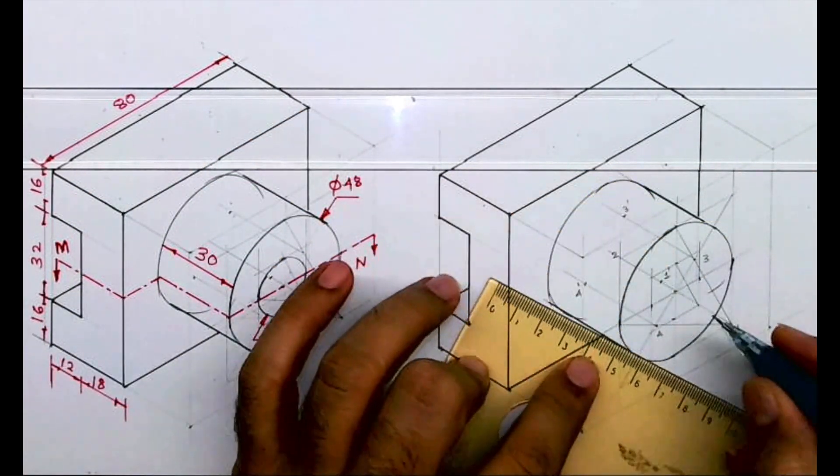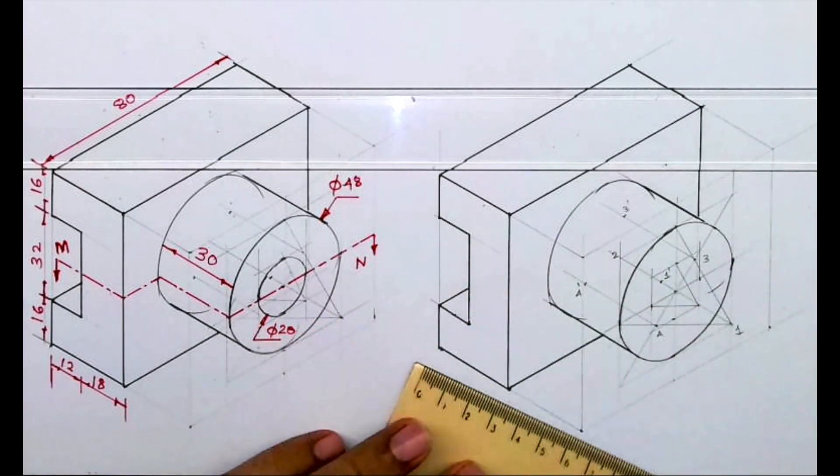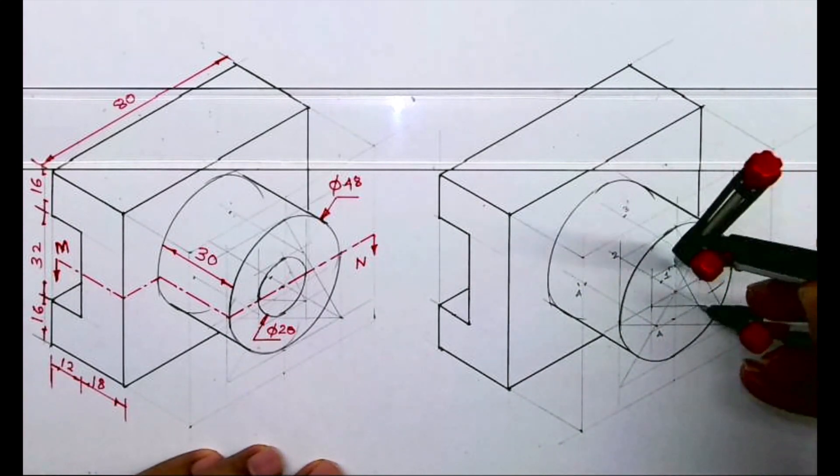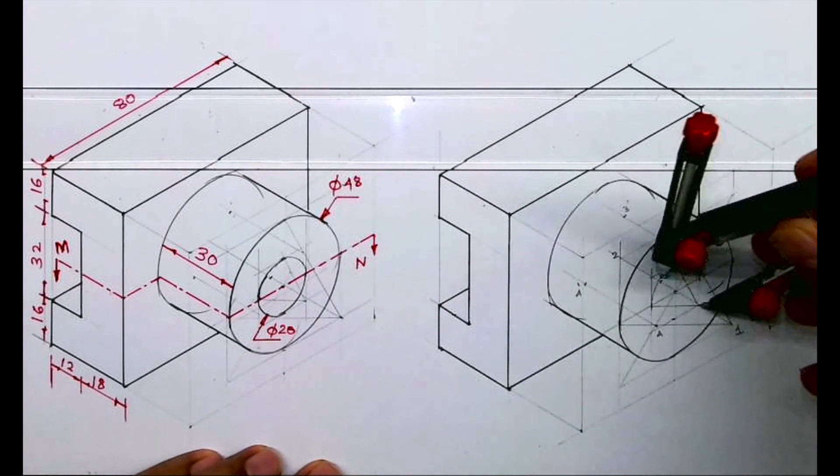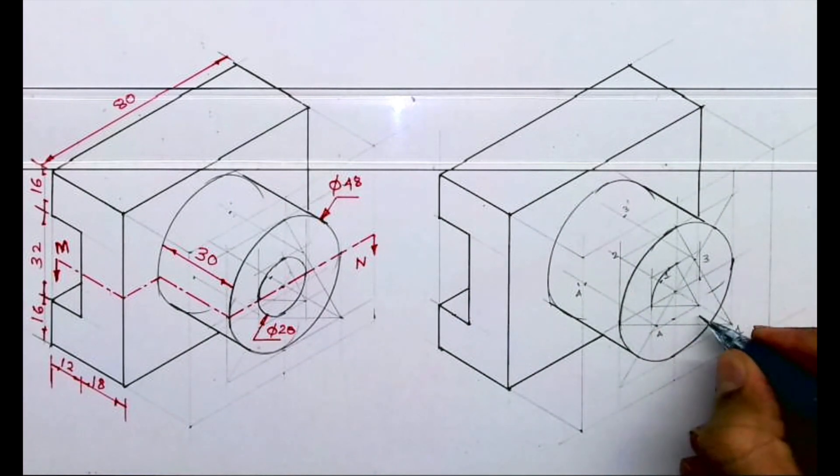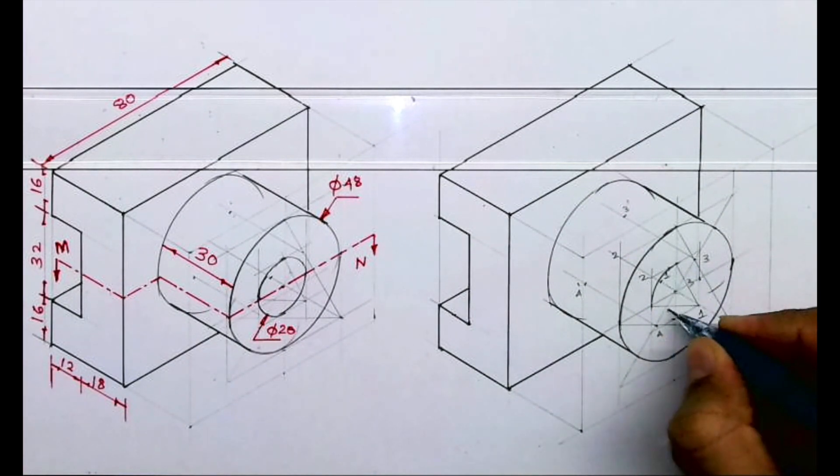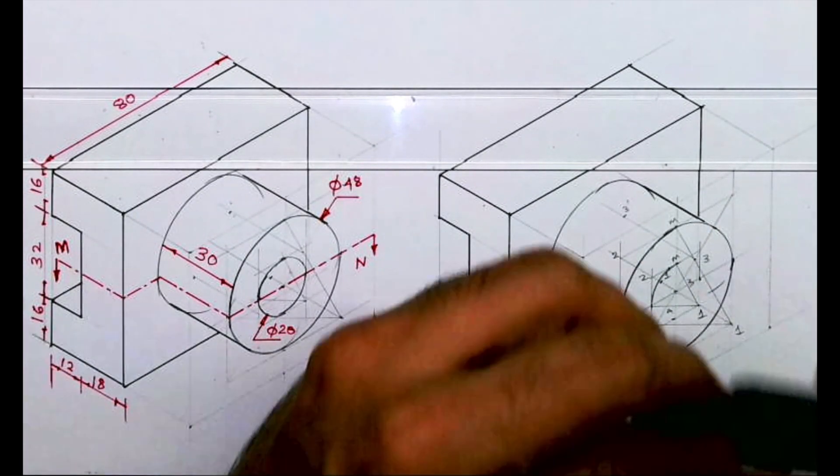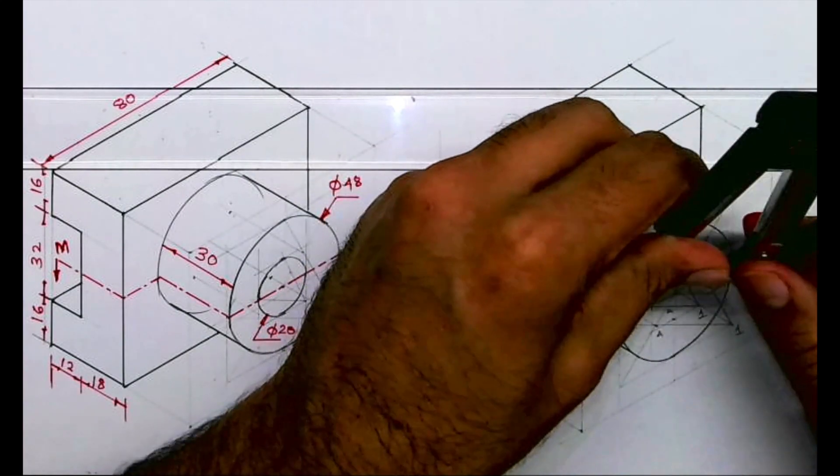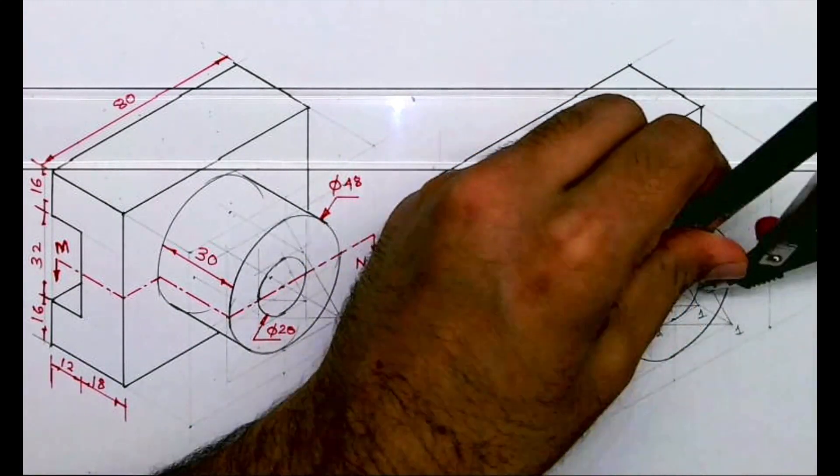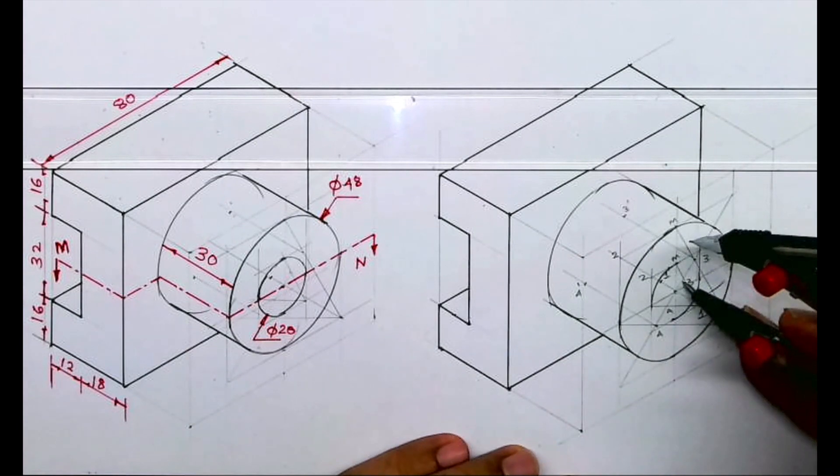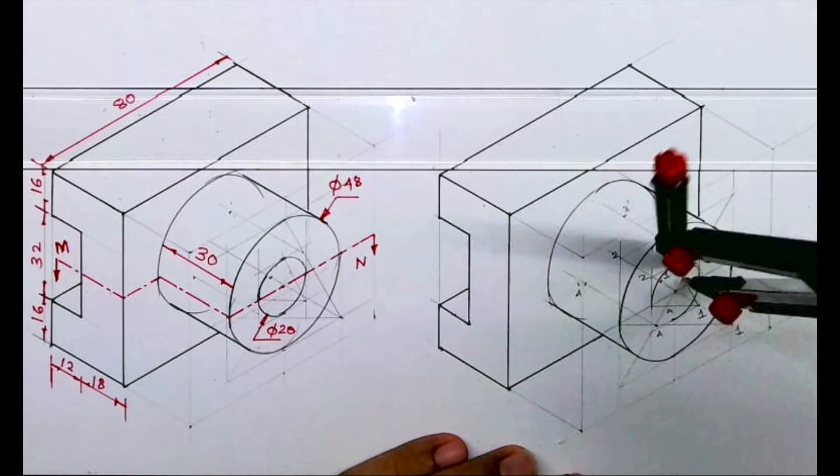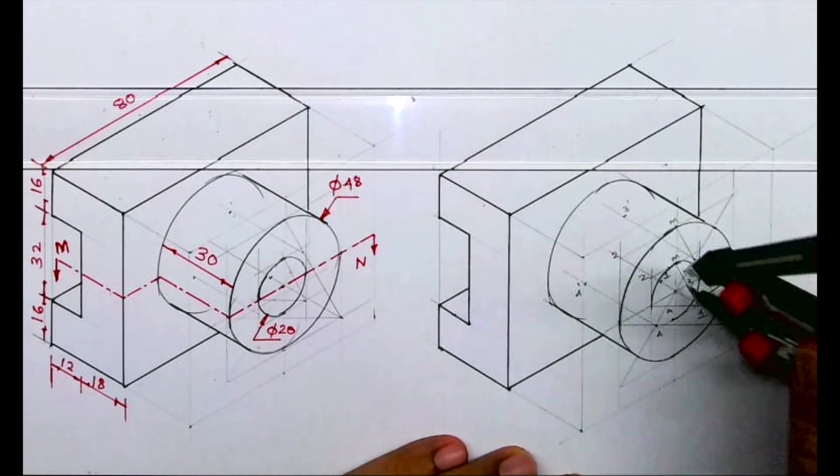Then again, same method. From 1 to M you draw a line. See, this you draw a circle, 1 to M, then again 2 to M, 3 to M, and 4 to M. Keeping the same radius, you can draw an arc from 2. Then again 3 to M you draw an arc, and 4 to M.